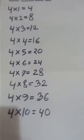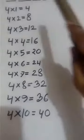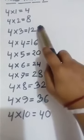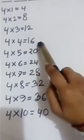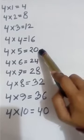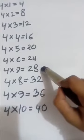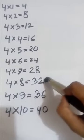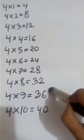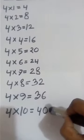At first, we recall the times table of 4. 4 times 1 is 4. 4 times 2 is 8. 4 times 3 is 12. 4 times 4 is 16. 4 times 5 is 20. 4 times 6 is 24. 4 times 7 is 28. 4 times 8 is 32. 4 times 9 is 36. And 4 times 10 is 40.